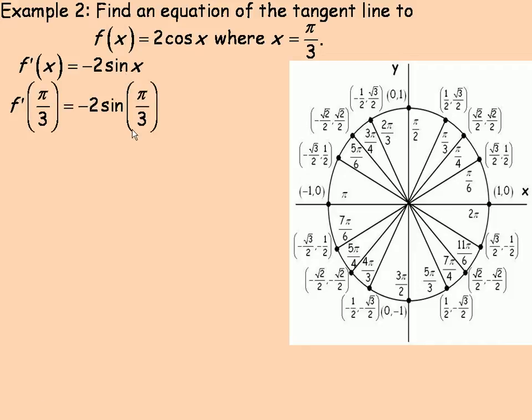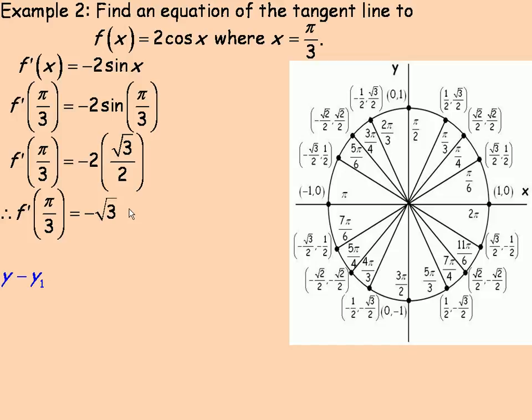To find the slope of the tangent line, we substitute π/3 in place of x, and that's what this unit circle is for—there's the π/3. Remember that it goes cos(x), sin(x), so the sine of π/3 is √3/2. Those 2's will divide out, so we just get -√3. That's the slope of the tangent line.